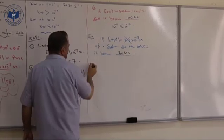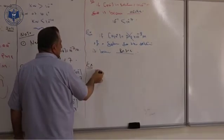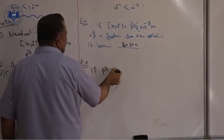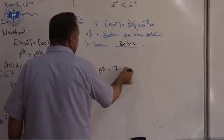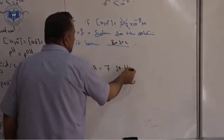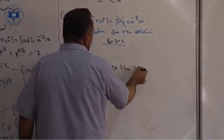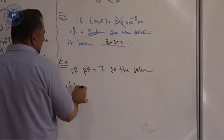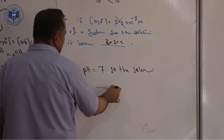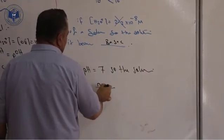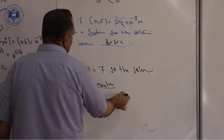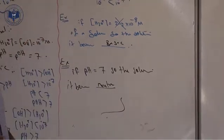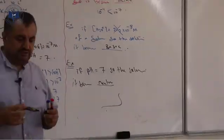Next example: if pH equals 7, what type is the solution? The solution is neutral.